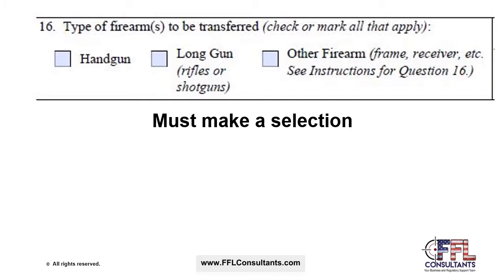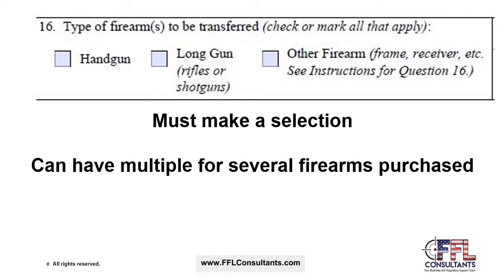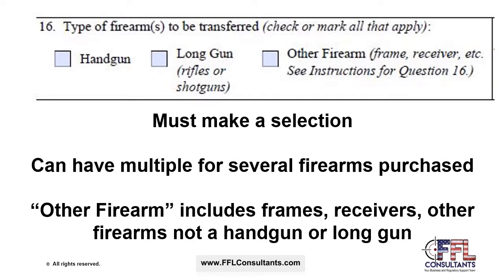Question 16 asks what type of firearm is being transferred. In most cases it's one firearm, and you should indicate whether it is a handgun, a long gun, or other type of firearm. Multiple firearms may be purchased — you may need to check more than one box in Question 16. The box for other firearm includes frames, receivers, and other firearms that are not a handgun or long gun. Question 17 asks if the transfer is occurring at a location other than the address listed on the federal firearms license — in some cases this may be an off-site gun show.